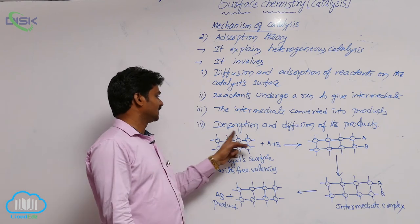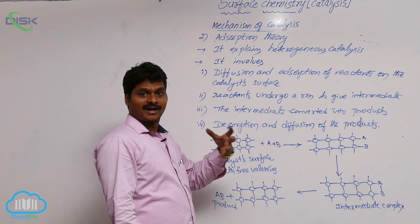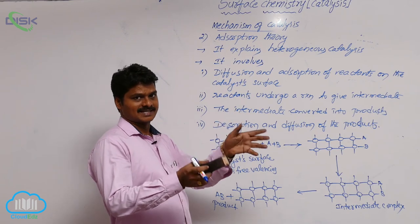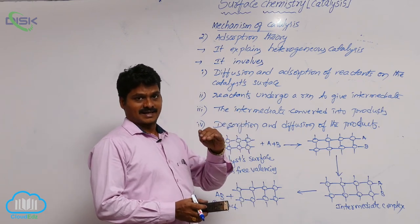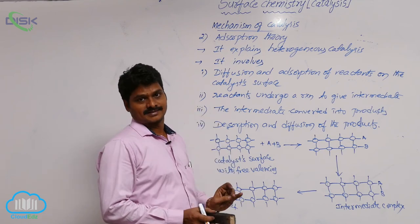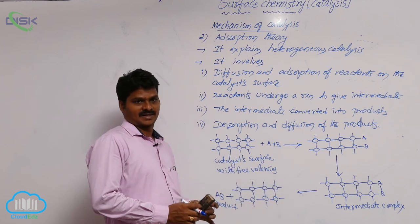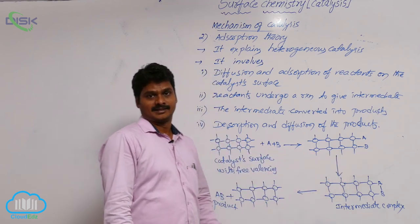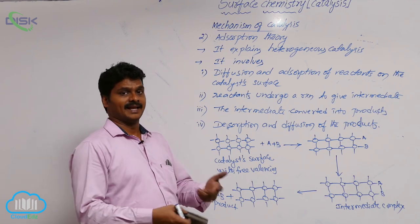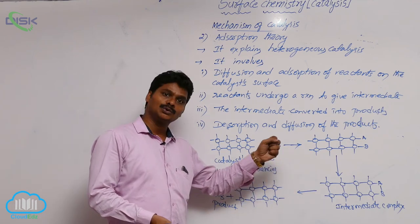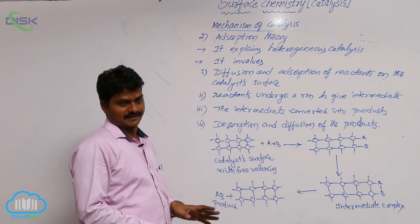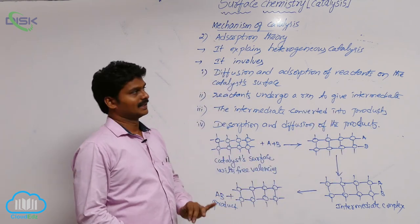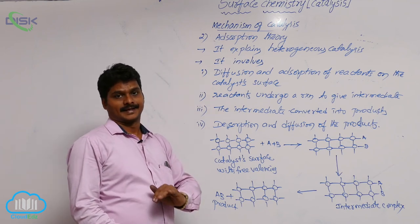Here, these free valences attract the reactant molecules because on the surface, valences are not satisfied. Molecules at the surface are under unbalanced attractions, and that is the reason for the adsorption of reactants. But these reactants which are adsorbed are not so strongly bound to the surface — they are loosely held — because finally they have to leave the surface. After the formation of products, they leave the surface easily when these bonds are weaker. So this is about heterogeneous catalysis.